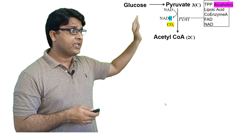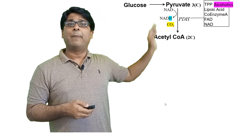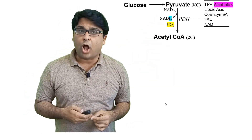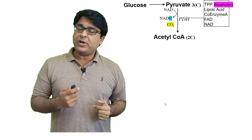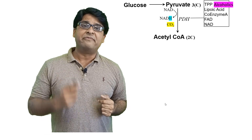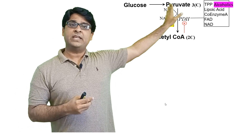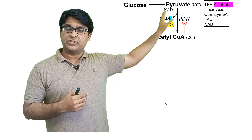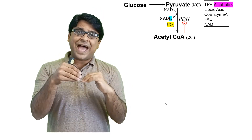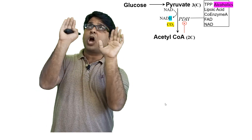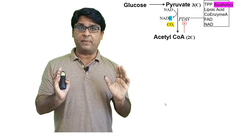To summarize: pyruvate, a product of glycolysis, is converted into acetyl-CoA by pyruvate dehydrogenase, which requires the cofactors listed. Pyruvate dehydrogenase is also well regulated — its own product, acetyl-CoA, negatively controls the enzyme allosterically, meaning that if more acetyl-CoA is produced it inhibits the enzyme: it signals that enough has already been made.